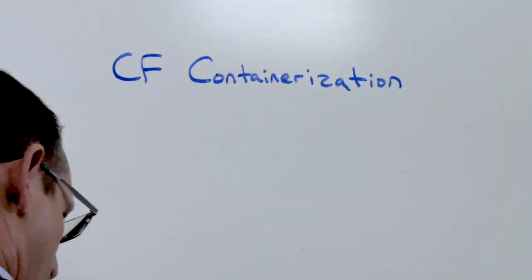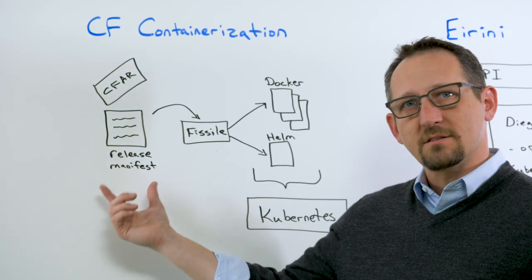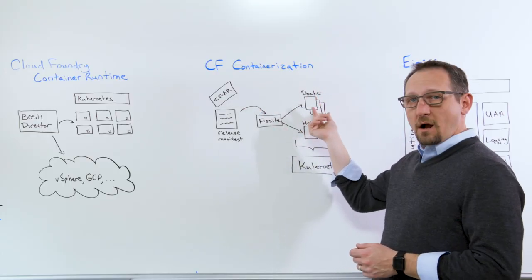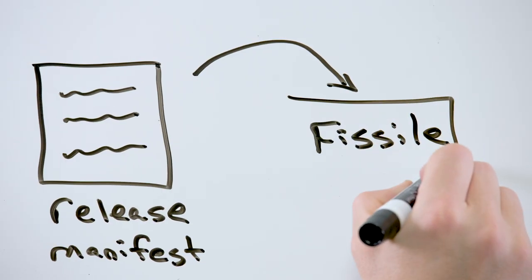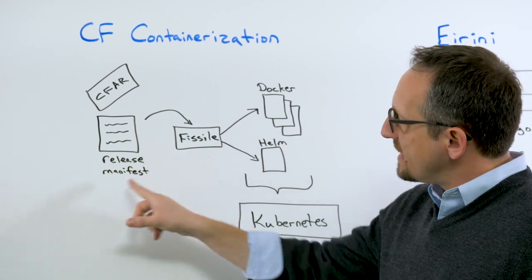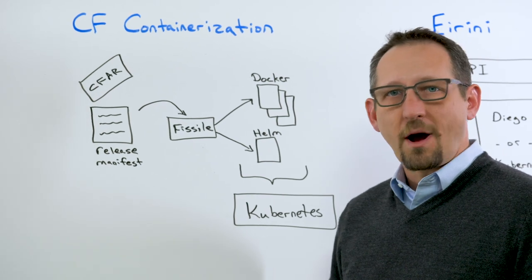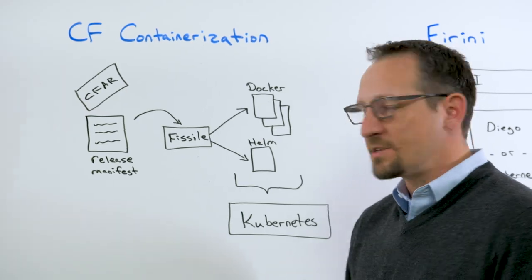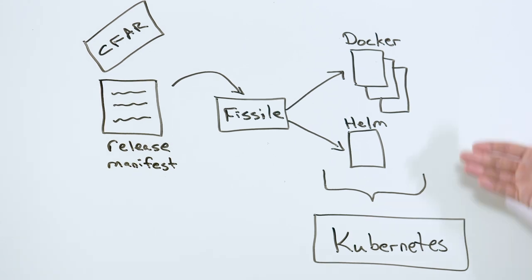All right, next up, CF Containerization. A very simplistic way of looking at it is going from the release manifests that are typically used by Bosch to deploy software into Docker images and Helm charts for deployment into Kubernetes. It does that by using a process called Fizzle, and this Fizzle code base is what takes this Bosch release manifest, creates a Docker image, runs the same logic that Bosch would typically run within a virtual machine to pull in the software that needs to be packaged, and then puts it together using a Helm chart that is then used to deploy Kubernetes.